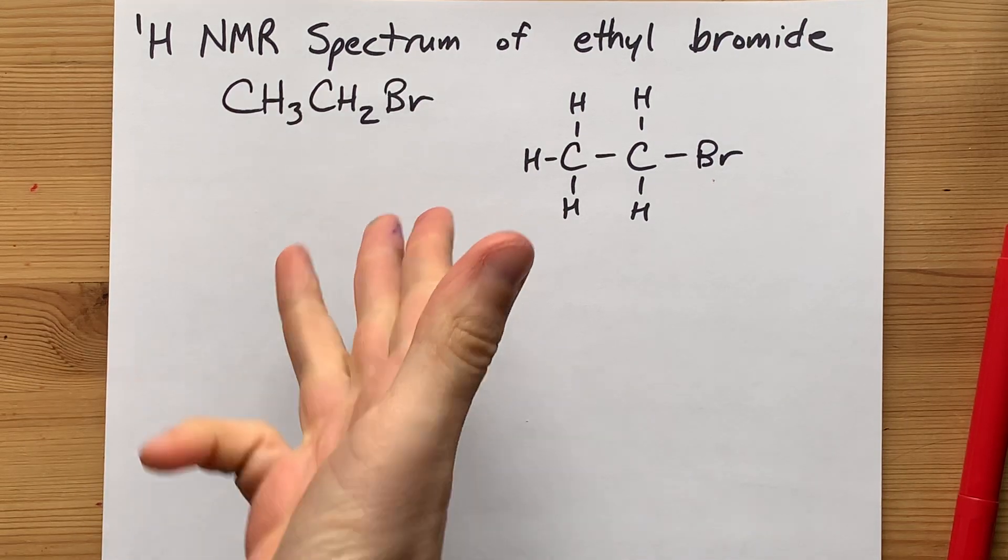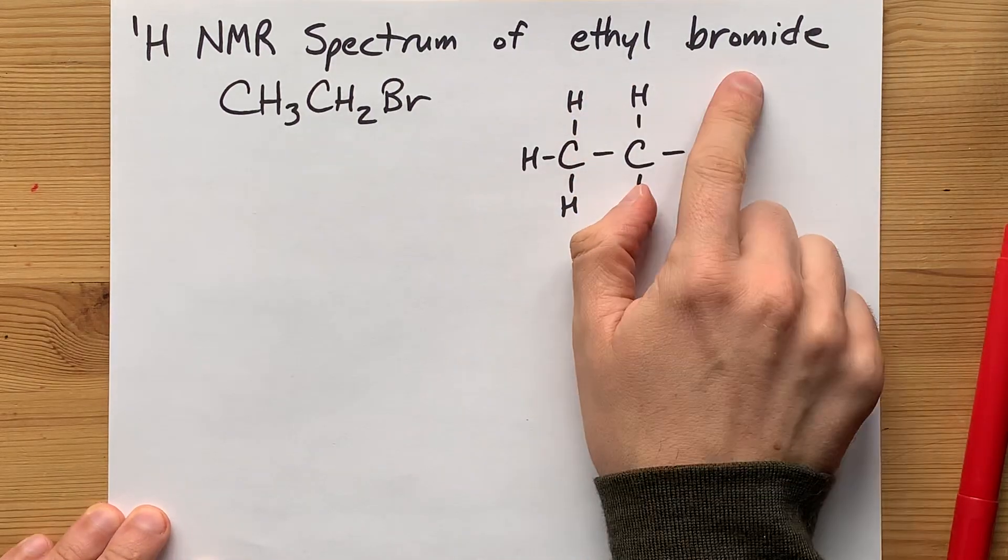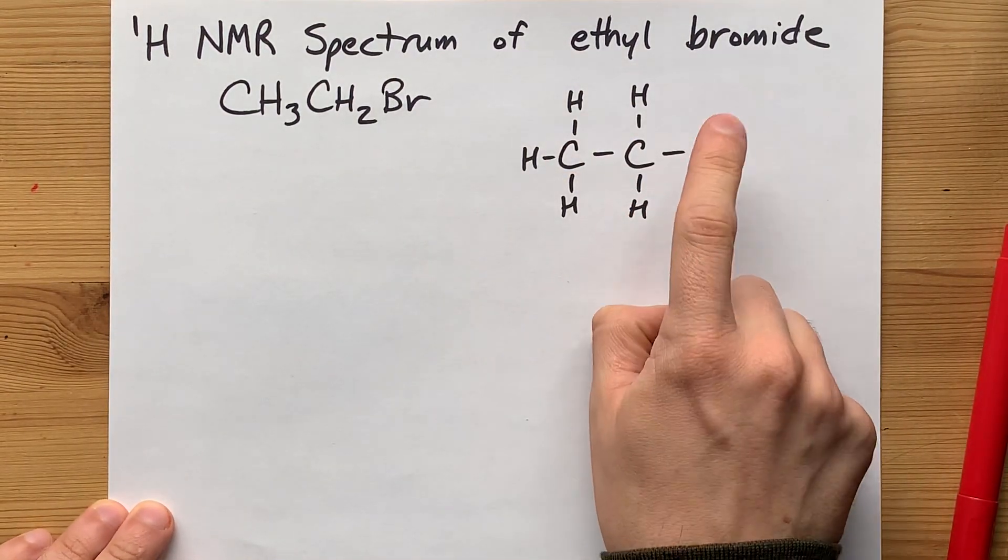I've had some requests for NMR spectrum, so let's draw the NMR spectrum of ethyl bromide. That's CH3CH2Br.